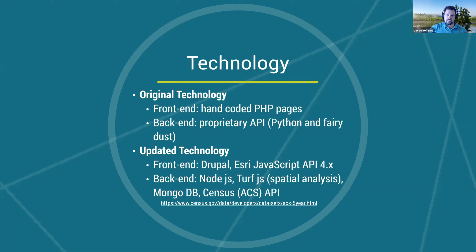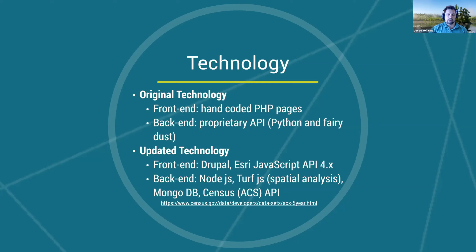On the back-end, the API they were using was a proprietary API that was mostly Python, a little bit of C++, and some magic glued together that nobody really understood. One of our first tasks was to see if we could get the old API to run and figure out the logic behind it to recreate it in a more maintainable manner. That didn't go well - there were proprietary libraries that just would not run. So we decided to revamp both the front-end and back-end with easier to understand, maintain technology.